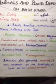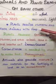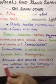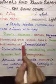Animals and plants both depend on each other. All living things need air, food, minerals, and light for survival. Plants provide humans and other animals with food, so animals and humans depend on plants for food. Plants are producers — they can make their own food by the process of photosynthesis.